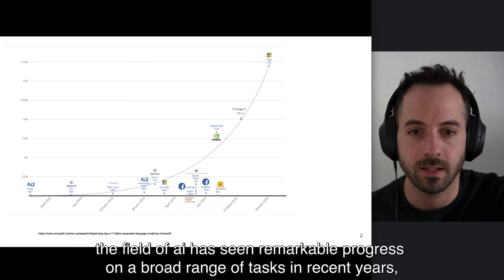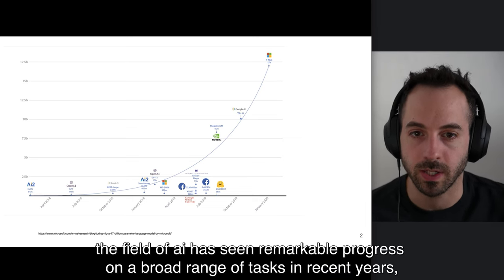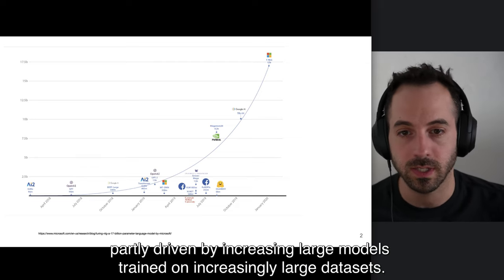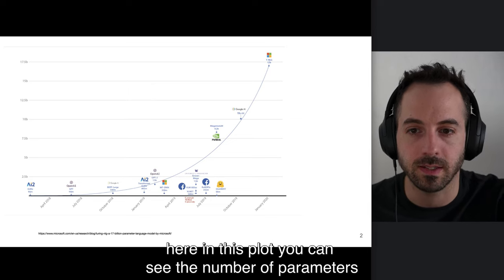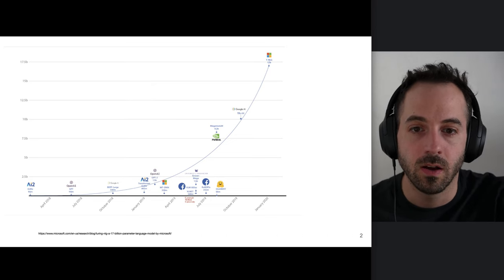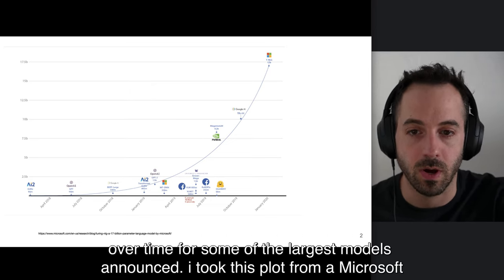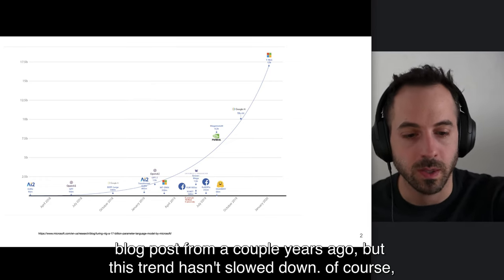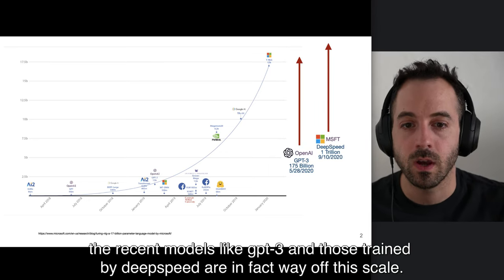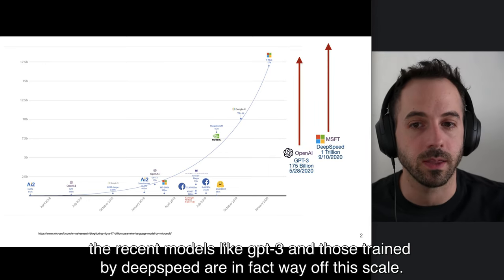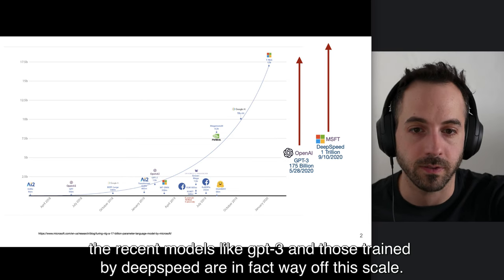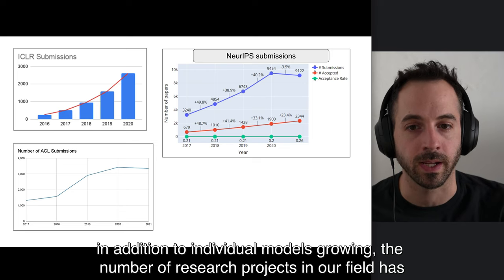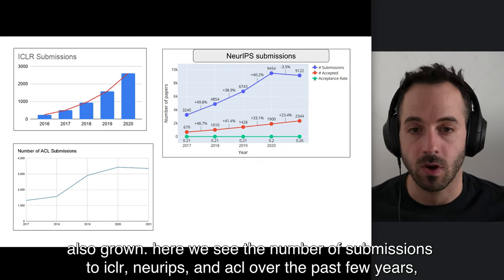The field of AI has seen remarkable progress on a broad range of tasks in recent years, partly driven by increasingly large models trained on increasingly large data sets. Here in this plot, we can see the number of parameters over time for some of the largest models announced. I took this plot from a Microsoft blog post from a couple years ago, but this trend hasn't slowed down. More recent models like GPT-3 and those trained by DeepSpeed are in fact way off this scale. In addition to individual models growing, the number of research projects in our field has also grown.